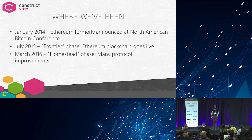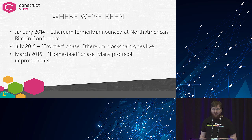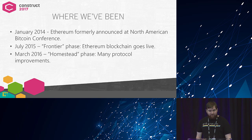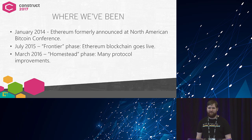In July 2015, we started the Frontier phase, which is when the blockchain actually went live. As you're thinking about these developments, consider that the Ethereum blockchain itself is less than two years old. March 2016, we had Homestead — it had a lot of protocol improvements that helped speed up transactions, make things more reliable, and brought us out of an alpha-beta phase.